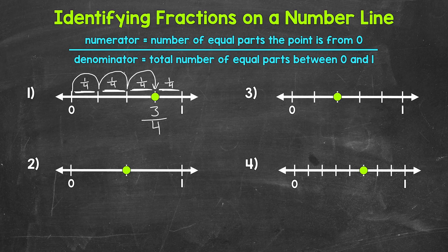So three is our numerator. Our fraction is three fourths. And looking at the number line, this makes sense. One whole is divided into four total equal parts — equal lengths — and the point is three out of the four total parts away from zero. To wrap up number one, let's label everything on this number line. We start with zero, which is just zero fourths — zero out of the four equal parts.